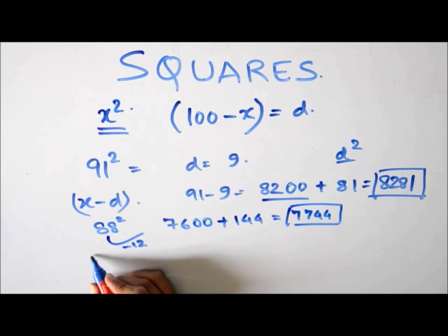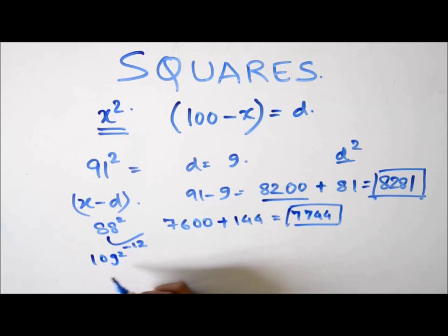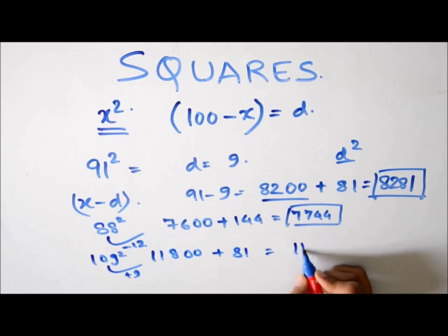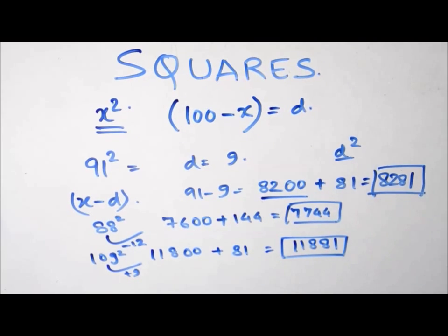Suppose it's more than 100. Say it's 109 square. It's 9 more than 100. So you add 9. 118. 118 double 0 and 81 square. So it is 11881. So this is simple. Very easily you can calculate.